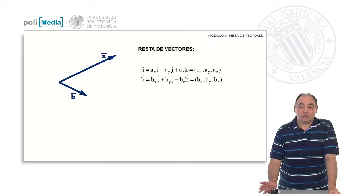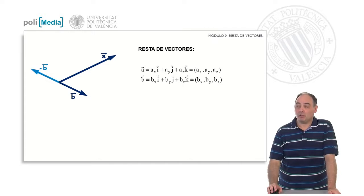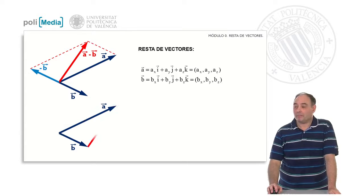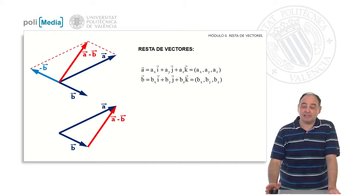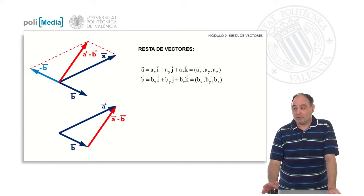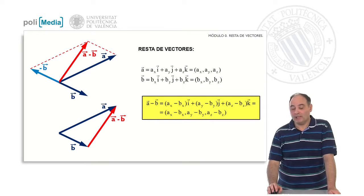As for the subtraction of vectors, it is like arithmetic: just as 7 minus 3 is 7 plus the opposite of 3, with vectors it is the same. If we want to subtract a minus b, we take the subtrahend vector b, take its opposite — which is the same vector with the same modulus and direction but opposite sense — and add a with minus b, so the result is the subtraction of both vectors. An alternative way is to represent the two vectors with a common origin and take the vector going from the end of the subtrahend to the end of the minuend. The analytical way is to subtract the components: x component of the minuend minus x of the subtrahend, and the same for y and z.